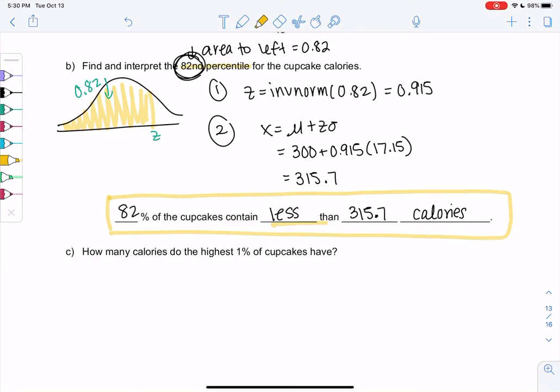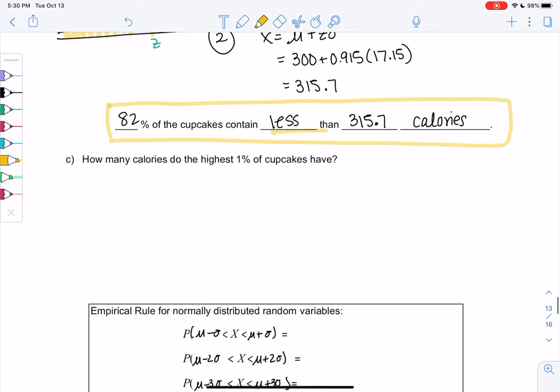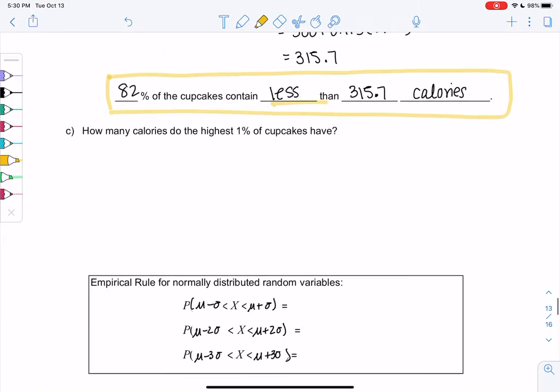Let's finish up example seven in section 6-3. Now we're going to look at the highest 1% of cupcakes. This is kind of like when people talk about the top 1% of income earners. So we're looking at the top 1% of cupcakes and how many calories they have. We know the percent, which means we know area. The highest makes me think it's to the right side, so area to the right.